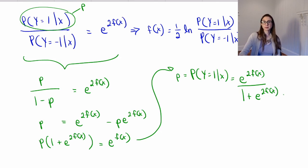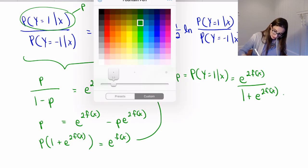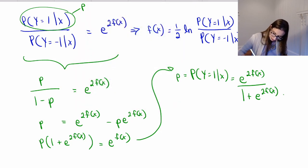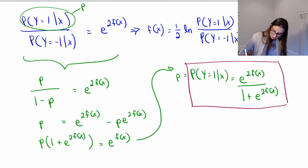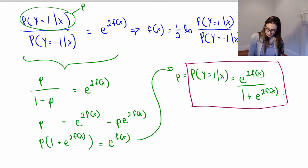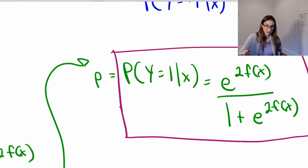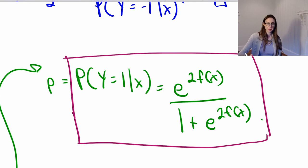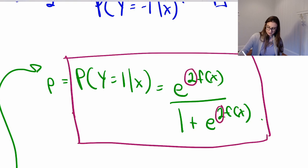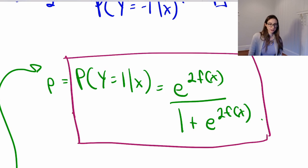So that is the probabilistic model. Given f(x), I can get an estimate for the probability that y equals 1 given x. And again, this formula is almost identical to logistic regression's probabilistic model — the only difference is these factors of two. It has almost exactly the same probabilistic interpretation as logistic regression.